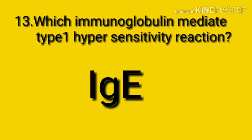Question number thirteen: which of the following mediates type 1 hypersensitivity reaction? The answer is immunoglobulin E. The difference between a normal infectious immune response and type 1 hypersensitivity is that in type 1 hypersensitivity the antibody is IgE instead of IgA, IgG, or IgM. Most allergic reactions are IgE-mediated and therefore most allergies are types of type 1 hypersensitivity.